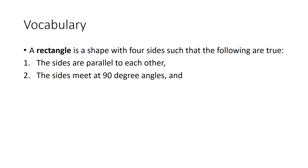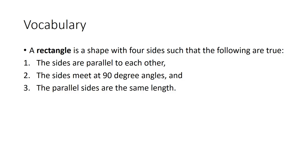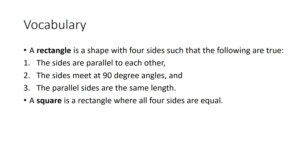A rectangle is a shape with four sides such that the following are true: the sides are parallel to each other, the sides meet at 90-degree angles, and the parallel sides are the same length.